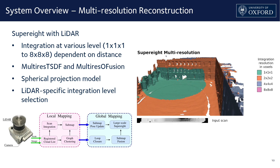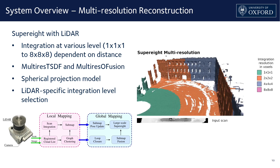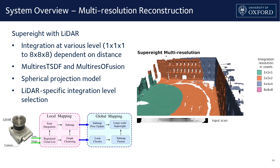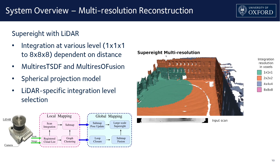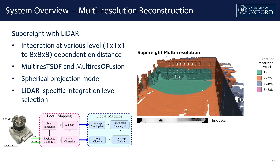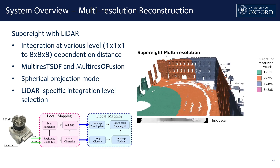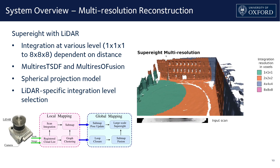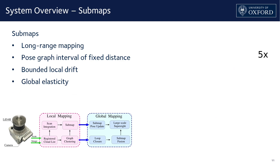On the right, we see the multi-resolution feature in action. LiDAR scans in a large-scale environment are integrated into the reconstruction on different scales based on the measured distance, which are represented in their unique color. Super8 leverages the sparse free space in a scene to improve the efficiency of the reconstruction. This feature of Super8 allows our system to integrate full-range LiDAR scans.